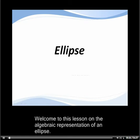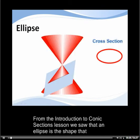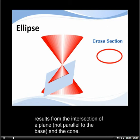Welcome to this lesson on the algebraic representation of an ellipse. From the introduction to conic sections lesson, we saw that an ellipse is the shape that results from the intersection of a plane not parallel to the base and the cone.